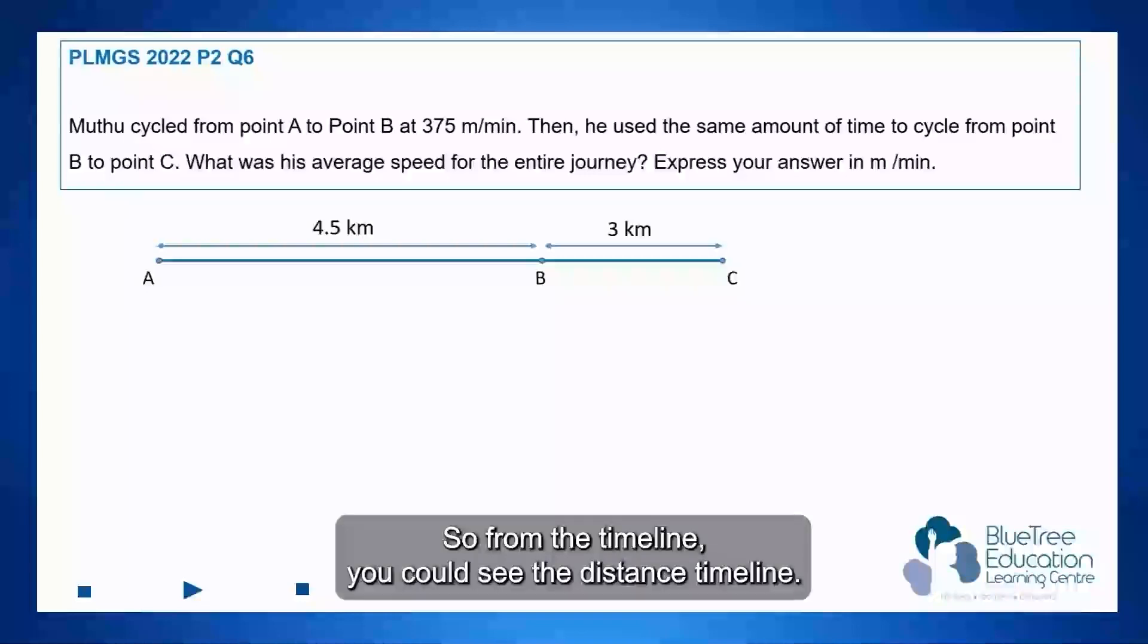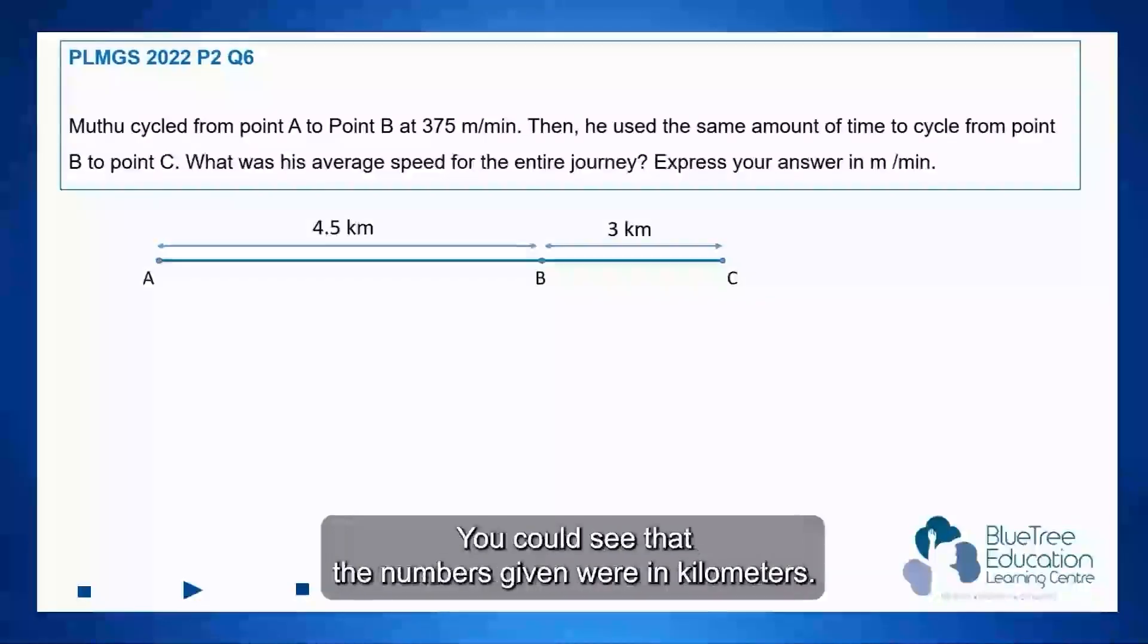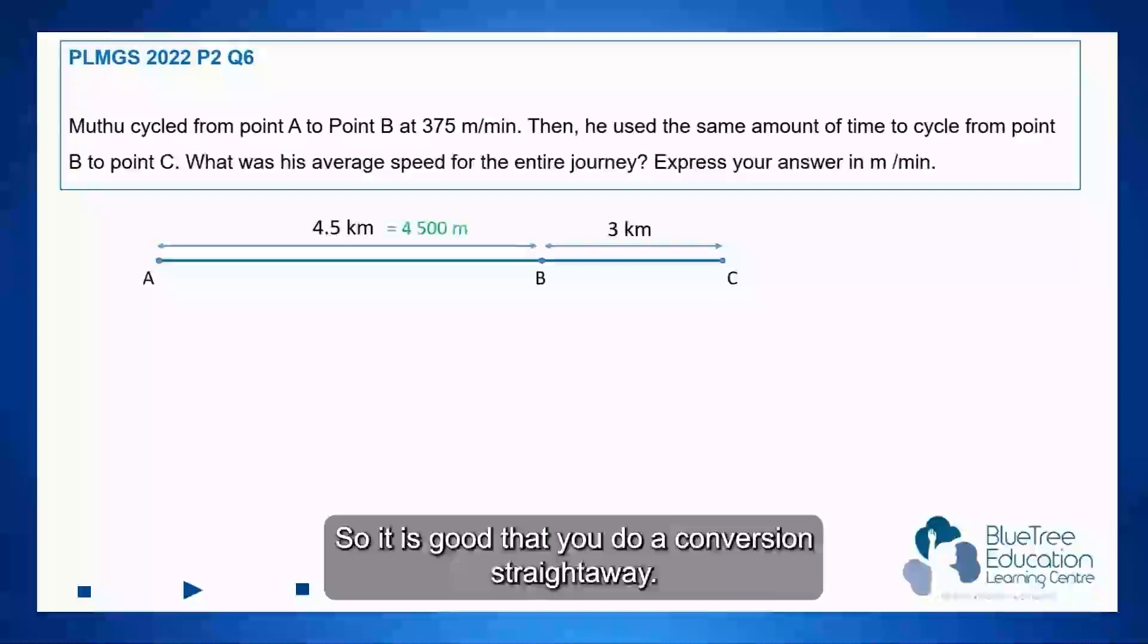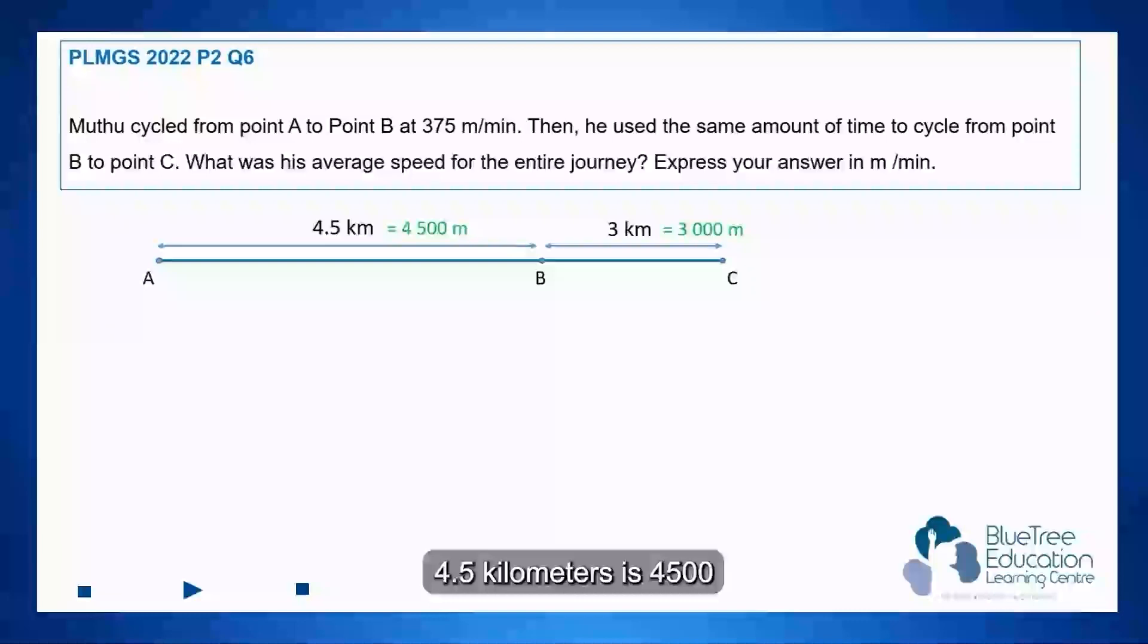From the distance timeline, you can see that the numbers given were in kilometers. So it is good that you do a conversion straight away. 4.5 kilometers is 4500 meters and 3 kilometers equals 3000 meters.